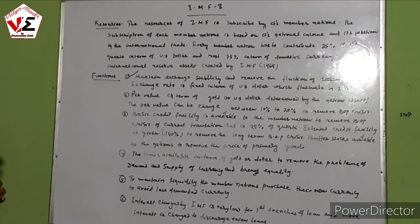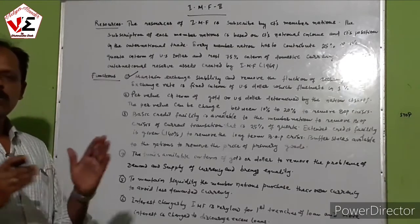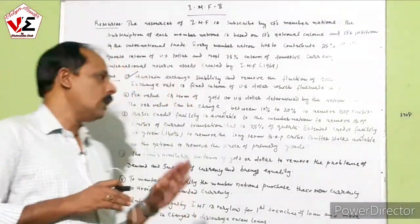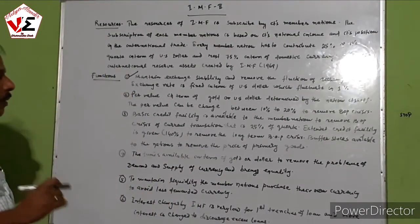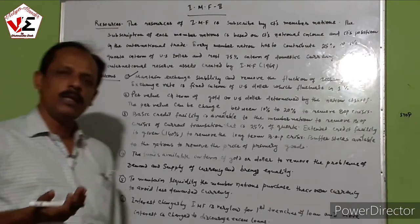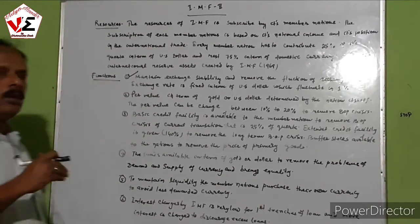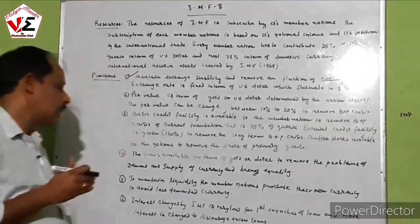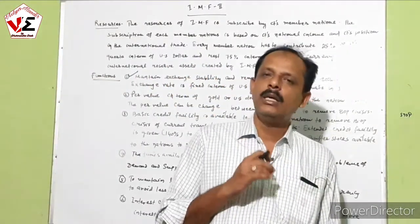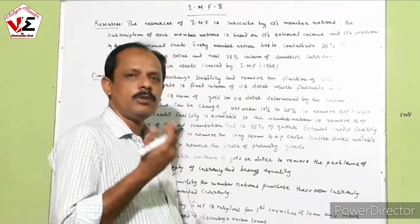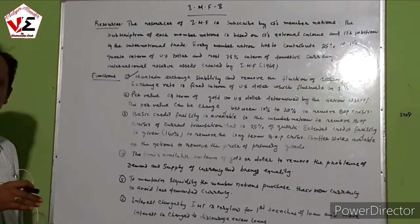Dollar funds are available in terms of gold or dollar to remove the problem of demand and supply of currency. In order to bring equality in the demand and supply of currency, dollar funds are made available by the IMF. Member nations purchase their own currency from the international market to maintain their own liquidity. Interest is charged by the IMF at a very low rate on the first tranche, but higher rates are charged on subsequent loans to discourage member nations from taking further loans.